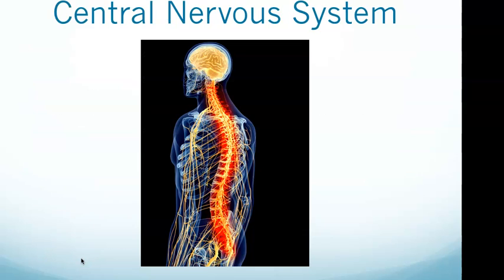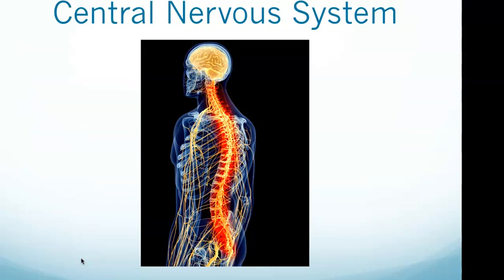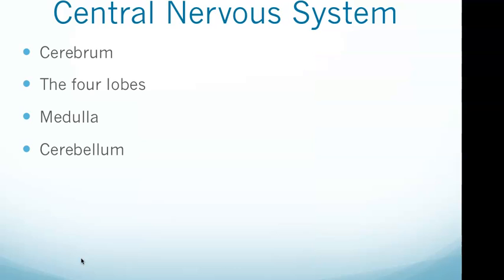The central nervous system is the brain and the spinal cord and associated nerves. The medulla, cerebrum, and cerebellum make up the central nervous system. The cerebrum is covered by a thick layer known as the cerebral cortex.